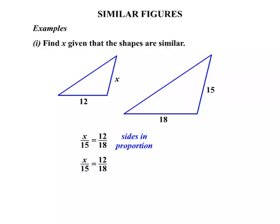We need to solve that. Let's rewrite it. Trying to find x. At the moment, it's being divided by 15. So let's multiply both sides by the 15. On the left-hand side, those 15s cancel. So therefore x equals, and 12 over 18 multiplied by 15 works out to be 10. So there we have it. x equals 10.